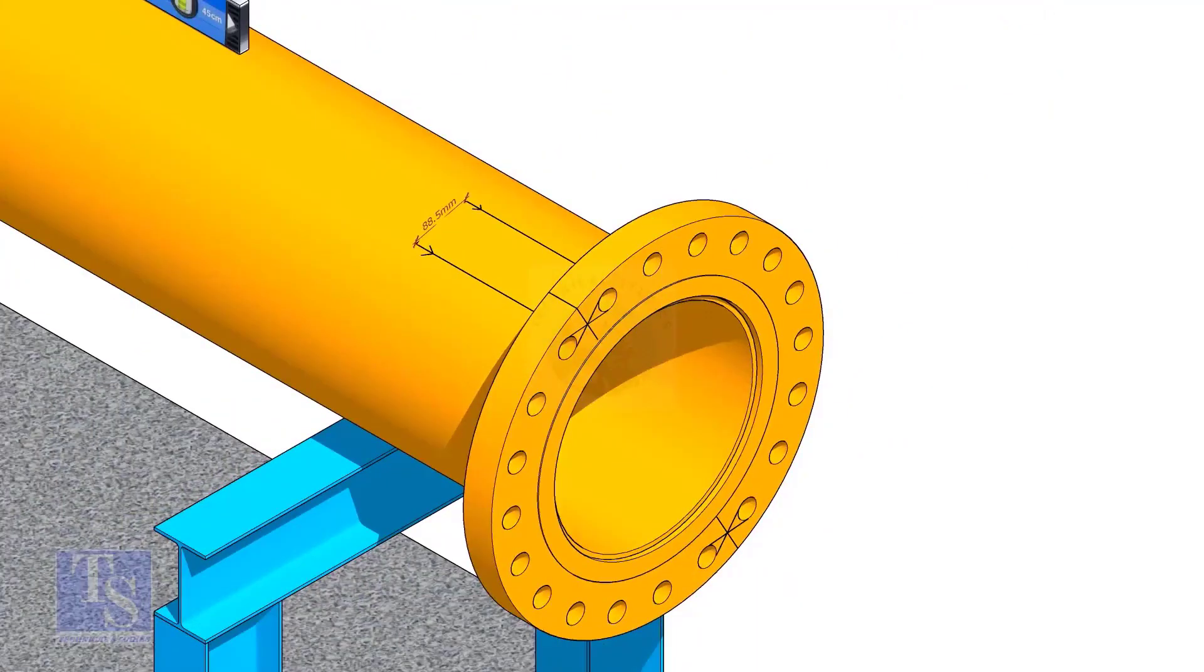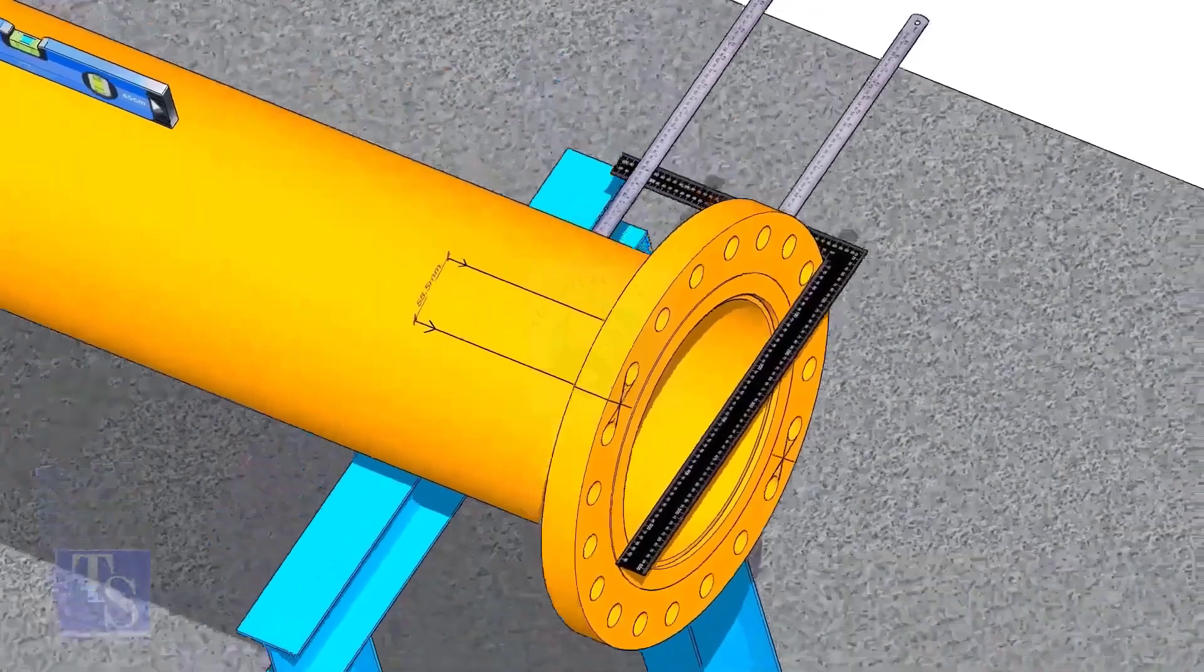Now, maintain the squareness of the opposite side and tack weld on both sides.